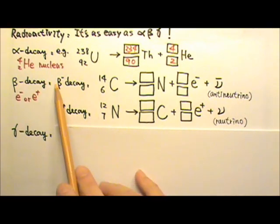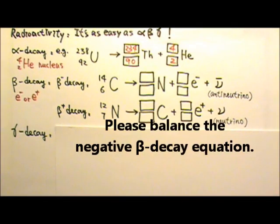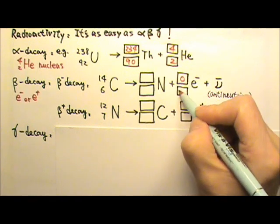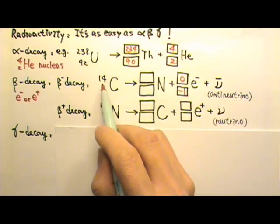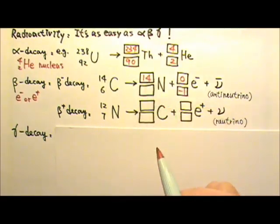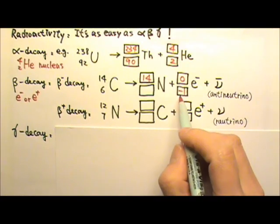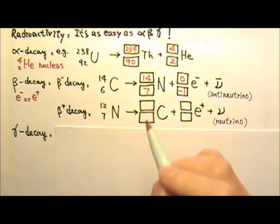Now see if you can balance this negative beta decay equation. We can put in zero negative one. So fourteen should equal to this plus zero, so this must be fourteen. Six must equal to this plus negative one, so this must be seven over here.